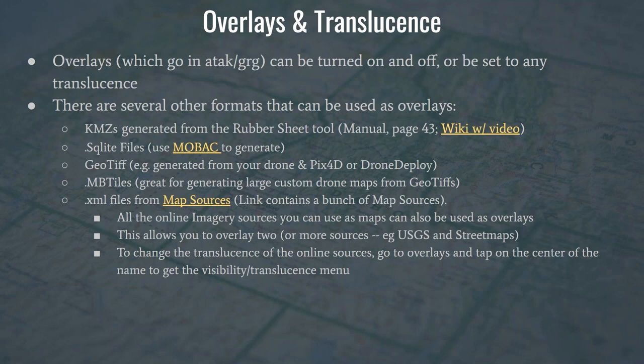Now that you have your base layer maps — OpenStreetMaps and many others are included in ATAC with more that can be added — most folks add them as a base layer, meaning what you see is what you get and you can't really do overlays. However, you can add definitions or other files in the ATAC GRG folder and overlay other maps on top of your base layer. A good example: you're running satellite imagery as your base layer but also want to display a rain layer, a precipitation layer, or a traffic layer on top of that.